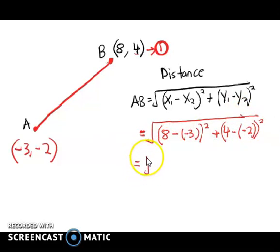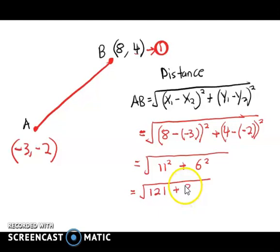Then we solve this, getting 11 squared plus 6 squared, which results in 121 plus 36, giving us the square root of 157.